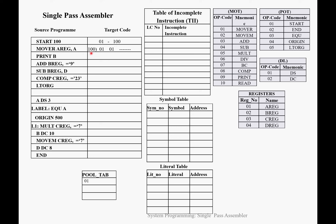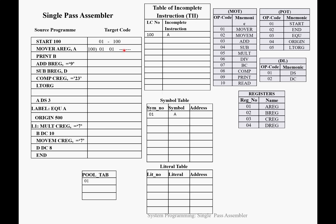Next statement: MU-R, AREG, A. The target code starts at location 100. MU-R has position 01 in MOT, AREG has position 01 in the register table. The third operand A is a symbol — we don't know the address of A yet, so we keep that field blank. We add A into the symbol table at the first position, and also add location counter 100 with incomplete instruction A into the table of incomplete instructions.